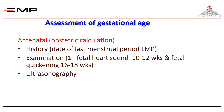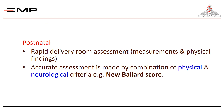How can we assess gestational age? Prenatally, we can ask the obstetrician, who can determine it from the date of the last menstrual period, the date of the first fetal heart sound heard at 10 to 12 weeks, fetal quickening or movement at 16 to 18 weeks, or antenatal ultrasound. Postnatally, rapid delivery room assessment can be done through measurements and physical findings. A more accurate assessment uses a combination of physical and neurological criteria via the new Ballard score.